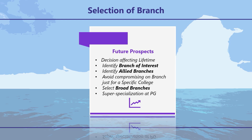Also, while selecting a branch at the undergraduate level, it is better to select broader branches like computers, information technology, electronics, or mechanical, rather than narrow branches like AIML, data science, aerospace, automobile, production, etc. Super specialisation should be done at the postgraduate level.